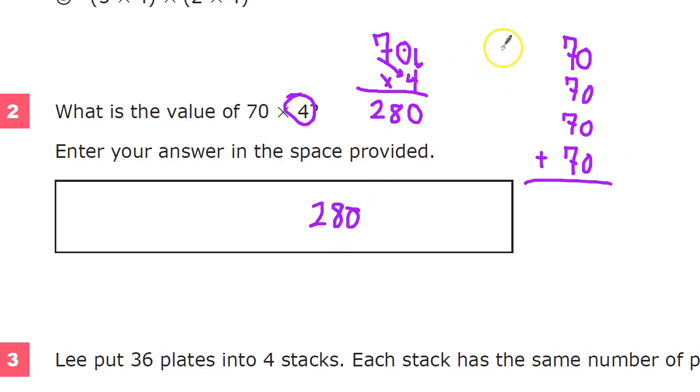So really, as I work this out, I have 0 times 4 going this way and then I have 7 times 4 going in the tens spot. 28 goes there, nothing goes there. There it is, 280.